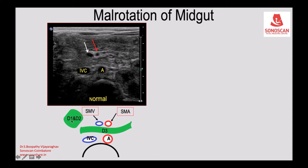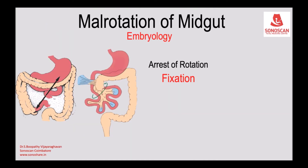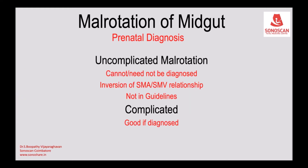You can see the first and second parts of the duodenum, and the superior mesenteric vein is to the left of the superior mesenteric artery — this is the abnormal relationship. In malrotation of the midgut, fixation occurs with a narrow mesenteric pedicle, which is a predisposing feature to malrotation of the midgut.